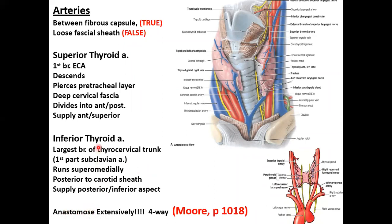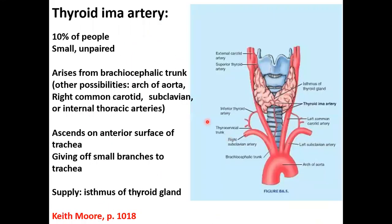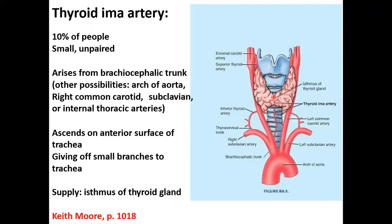These two arteries have extensive anastomosis. The thyroid ima artery is present in about 10% of patients. It's a small, unpaired artery that can arise from the brachiocephalic trunk, the arch of the aorta, the right common carotid, the subclavian, or the internal thoracic artery. It ascends on the anterior surface of the trachea, gives off small branches to the trachea, and supplies the isthmus of the thyroid gland.